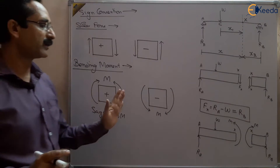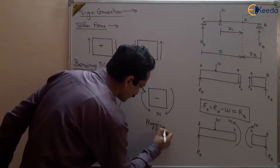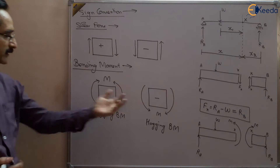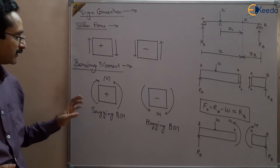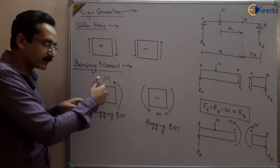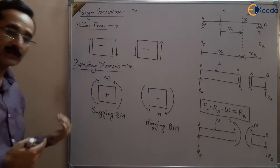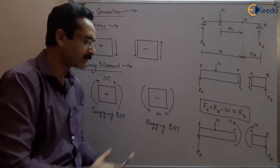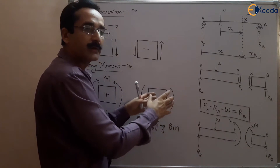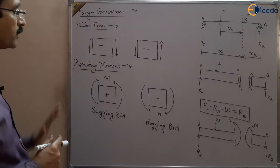We have to choose only one direction. Suppose we have chosen the leftward direction. In that case, the clockwise couple will be positive and the anticlockwise couple will be negative. If we have chosen the rightward direction, then anticlockwise couple will be positive and clockwise couple will be negative. This is the method of taking the sign convention of shear force and bending moment.